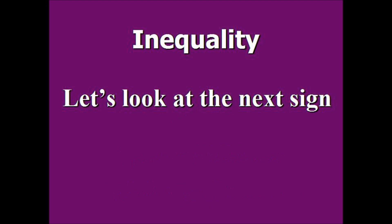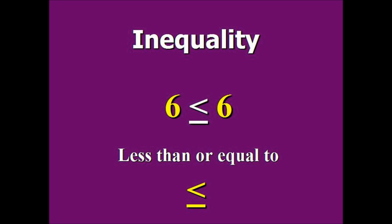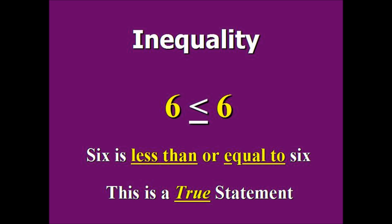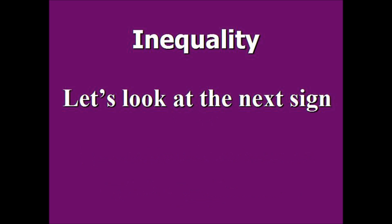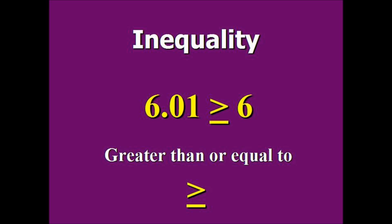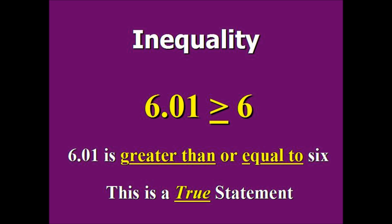Now we have 6 and another sign and 6 again. That symbol is less than or equal to. It reads: 6 is less than or equal to 6. This is a true statement. Now we have 6.01, a new sign, and 6. This sign is greater than or equal to. It reads 6.01 is greater than or equal to 6. This is a true statement because 6.01 is greater than 6.